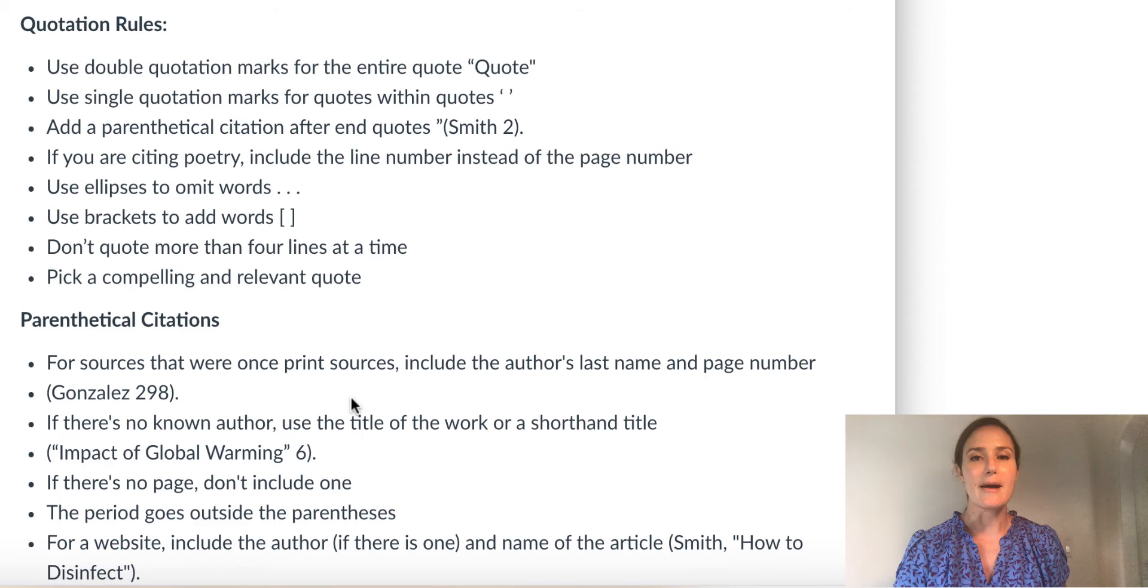If you're citing poetry, you include the line number in parentheses as opposed to the page number. That makes sense because most poems, unless they're epic poems, are short. So it makes more sense to cite the line number, like line 5 or line 7 or line 14, than the page number.